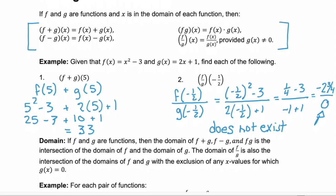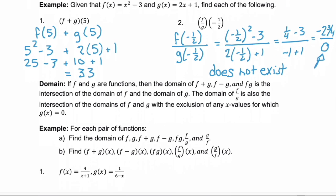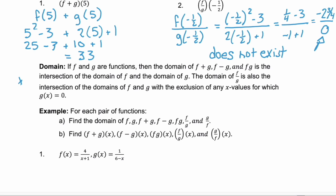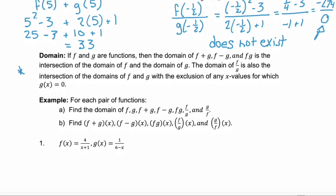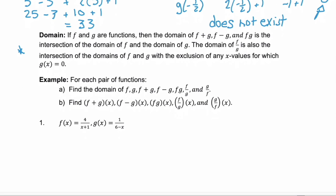Now, finding the domain of these different functions. If f and g are functions, the domain of adding, subtracting, or multiplying them is anything the two domains have in common — the intersection of those domains. The domain when you divide the functions is also the intersection of those domains, excluding anything that makes g of x — the denominator — equal to zero, because the denominator can never be zero.